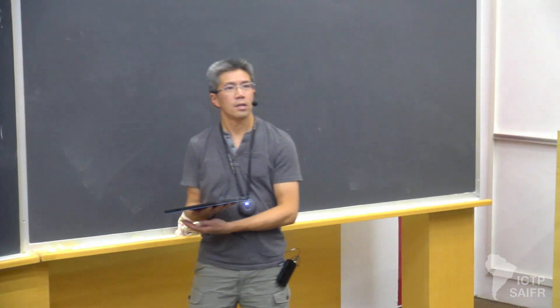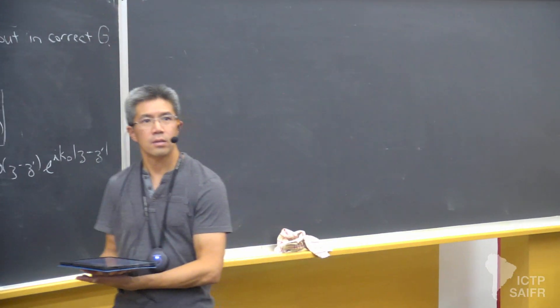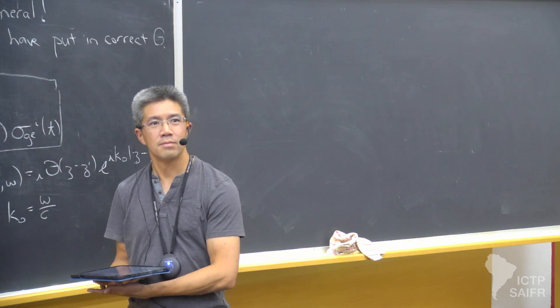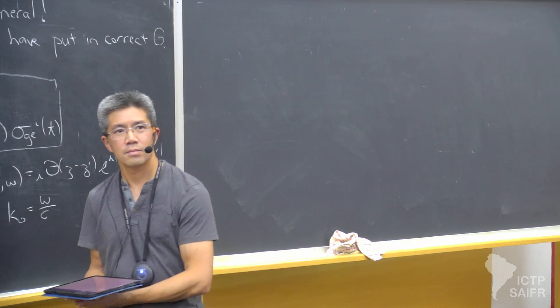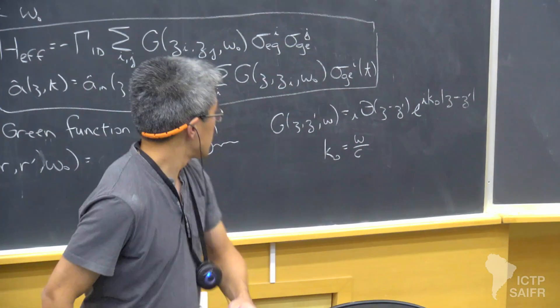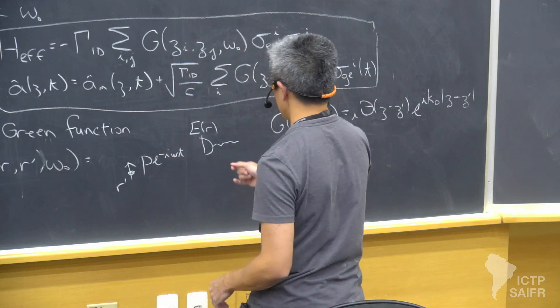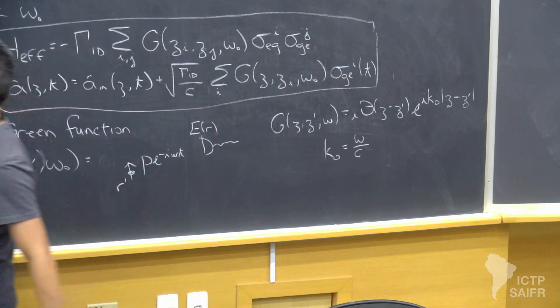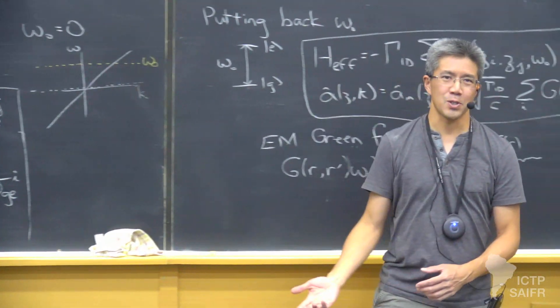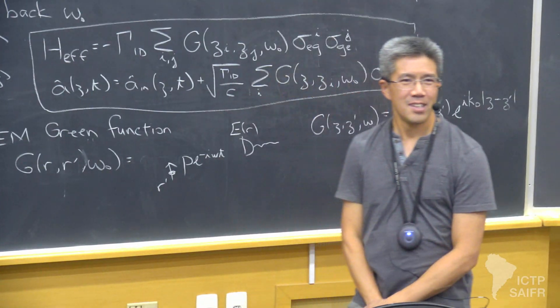You just told us that the 1D chiral waveguide model is integrable, meaning that it has factorizing scattering matrices and so on. This effective model in one dimension is also integrable with the spin model? Yes. So this model here is also integrable. But again, it's the same story. It's not as good as it sounds in real life.